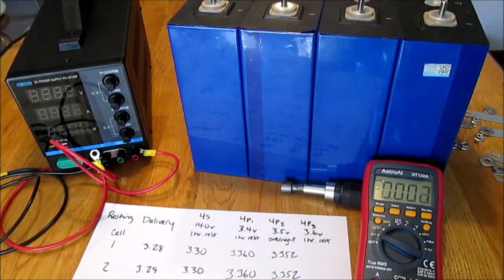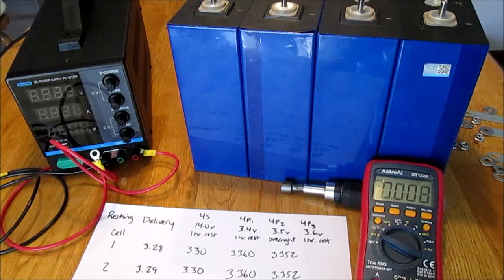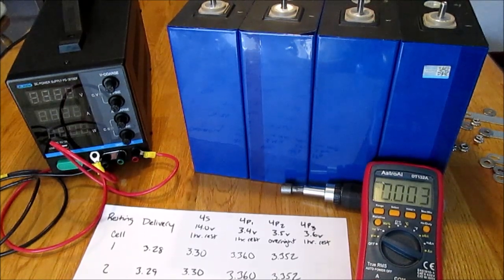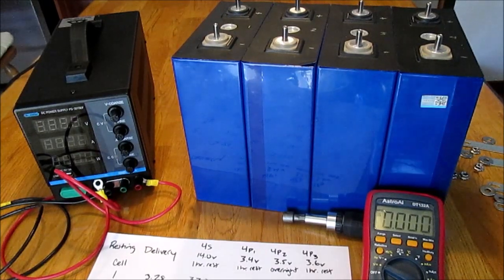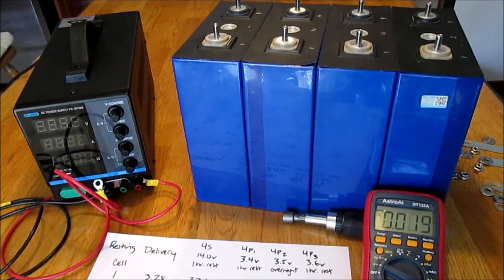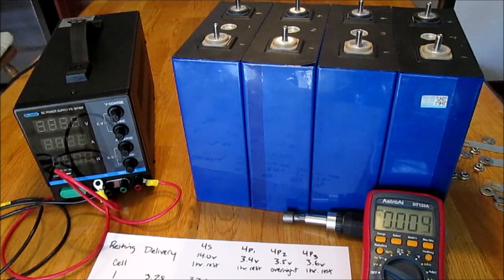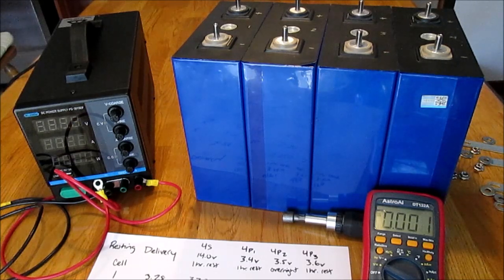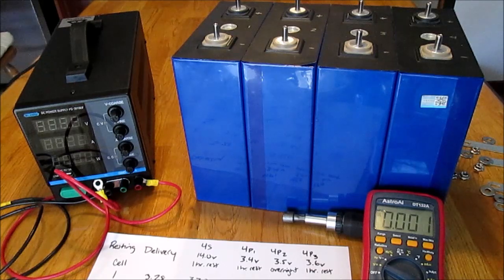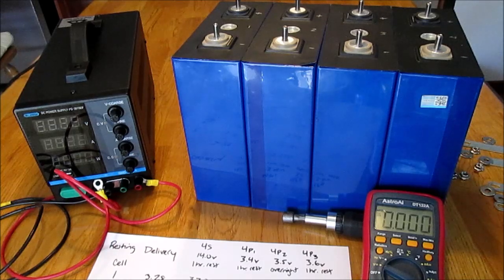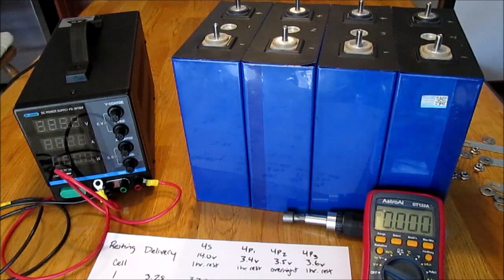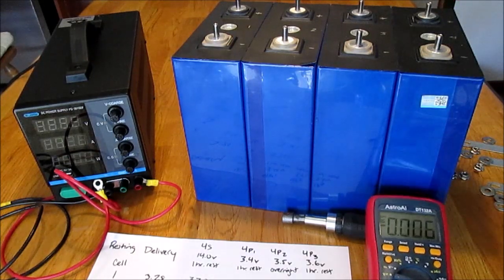As you can see I've now taken the bus bars off and we're going to take some voltage readings on each of these individual cells. Hopefully you'll be able to get a view of my multimeter as I do this. Hopefully we'll also see that after four charging stages for the purpose of top balancing these cells, after having charged them up to 3.6 volts and given them a one hour rest, that we have a very well balanced group of four 280 amp hour cells.